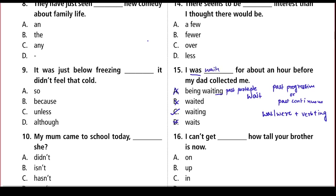The correct answer becomes: 'I was waiting for about an hour before my dad collected me.' The trick to solve such questions is to always trust the rules. Once you see that a rule you are aware of perfectly fits the answer, you just need to quickly check the remaining options to eliminate them, and you can easily and confidently choose your answer.